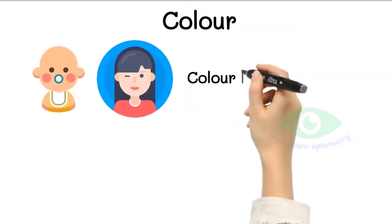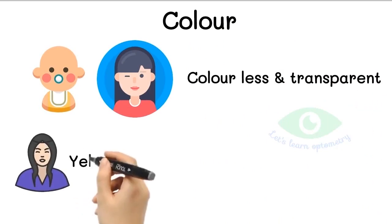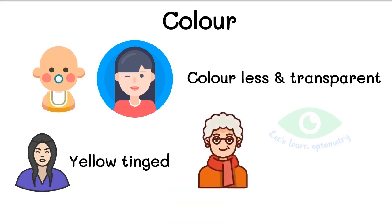The color of the lens changes with age. In infants and young adults, it is transparent and colorless. After 30 years of age, it acquires a yellow tinge, and it appears amber colored in old age.